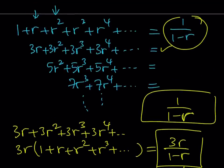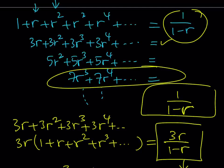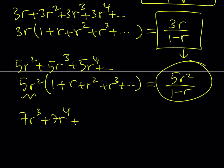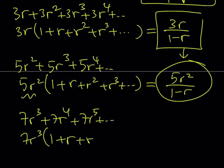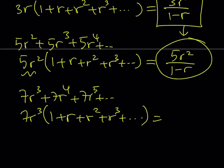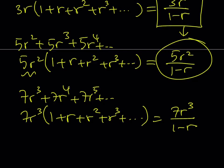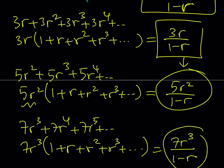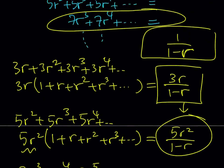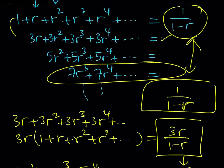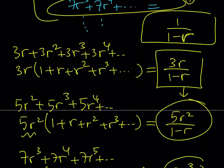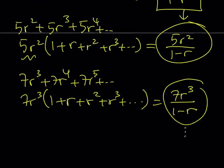To get the pattern, let me do one more. The next series has 7 in it, starting with 7r cubed plus 7r to the fourth power plus 7r to the fifth power, and so on. This can be written as 7r cubed times the quantity 1 plus r plus r squared plus r cubed, and so on. The expression inside the parentheses is 1 over 1 minus r, so multiplying gives 7r cubed over 1 minus r. We've expressed the first four sub-series in terms of r, and now we're going to add them all together.